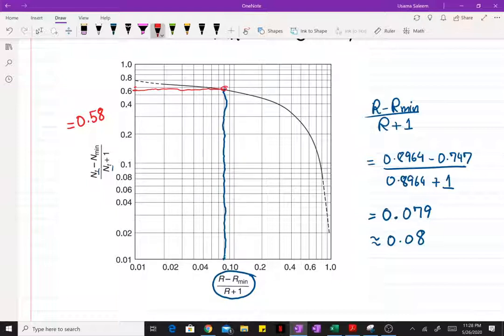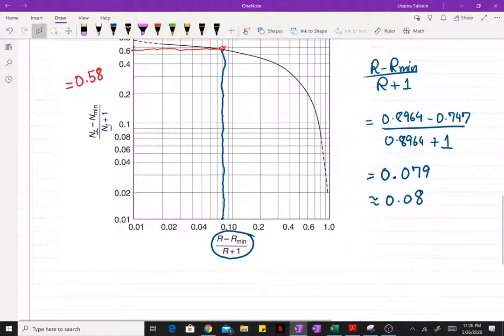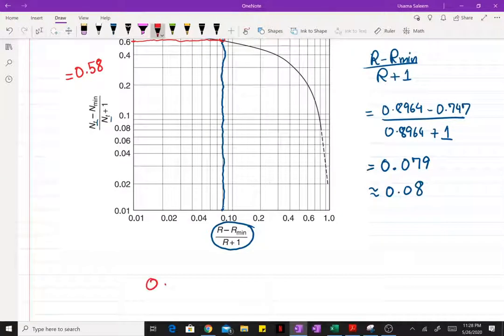It's like closer towards the next increment. Okay, so if our vertical axis reads 0.58, we can find the number of theoretical stages as N_t minus minimum number of stages, which was 4.83, divided by N_t plus 1.